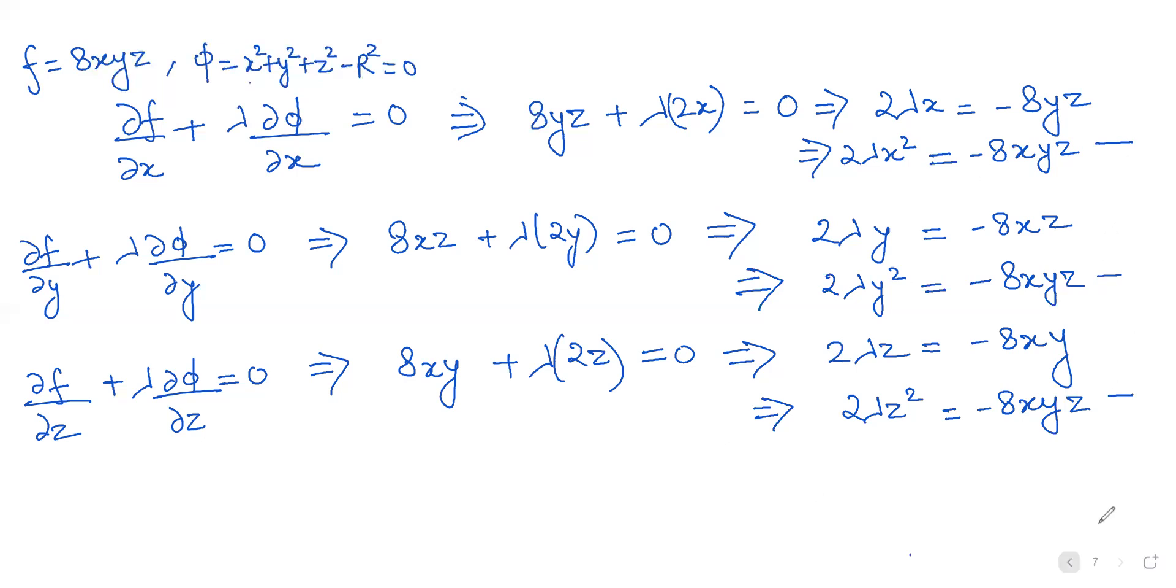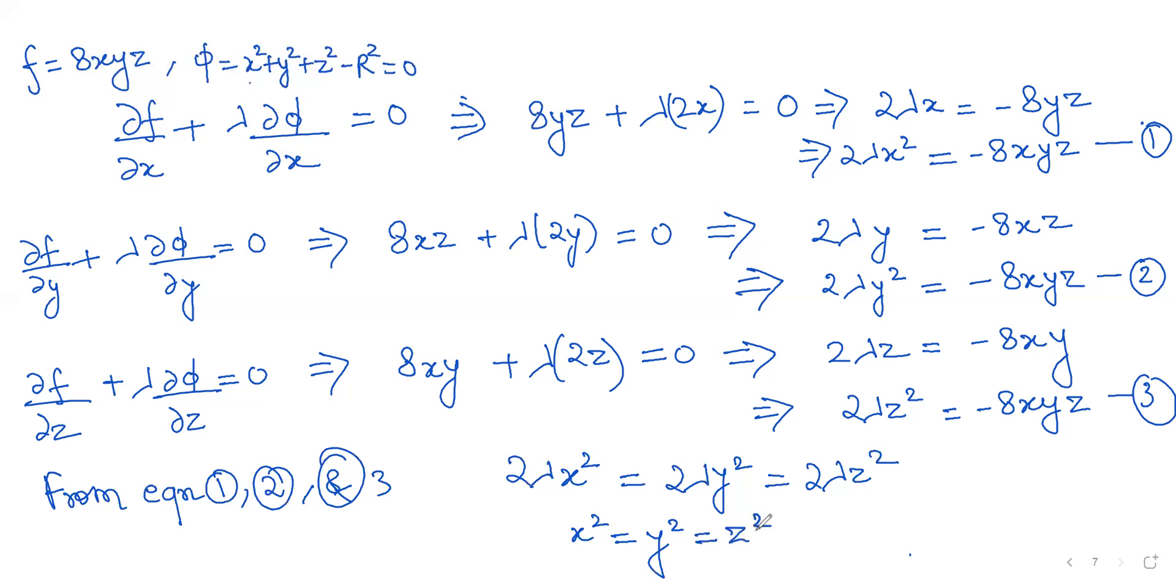Now you see that in these equations, the right hand sides are equal, so the left hand sides are equal. From equations 1, 2, and 3, RHS are equal so we can write LHS also equal. That means 2λx² = 2λy² = 2λz². That means x² = y² = z². So x = y = z.